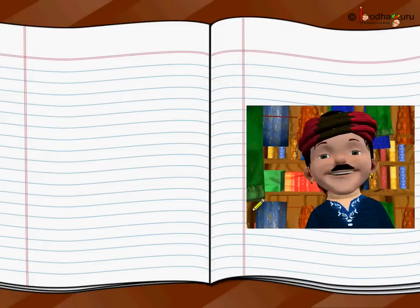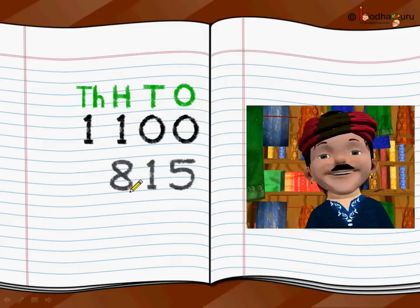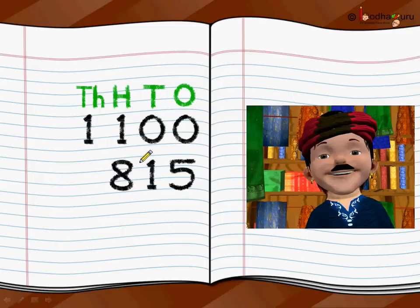Let's take another problem. Mohan is a cloth merchant who sells cloth every day. In his shop he had 1100 meters of cloth, and that month he sold 815 meters of cloth — that's why he's happy, he sold a lot. If he wants to find out how much cloth is left in his shop for the next month, he will do subtraction. He had 1100 meters and 815 meters are sold, so how much is left?